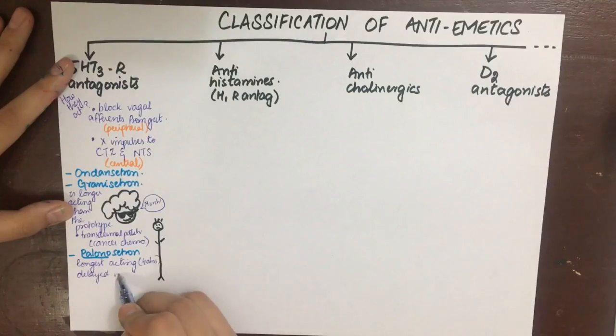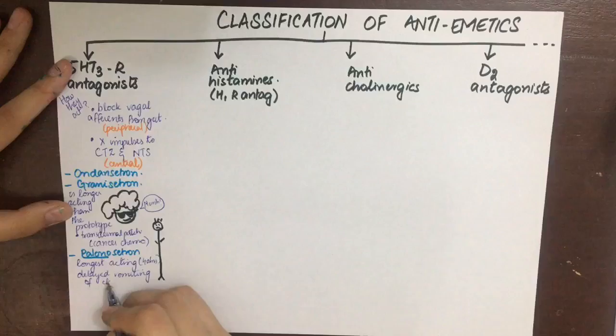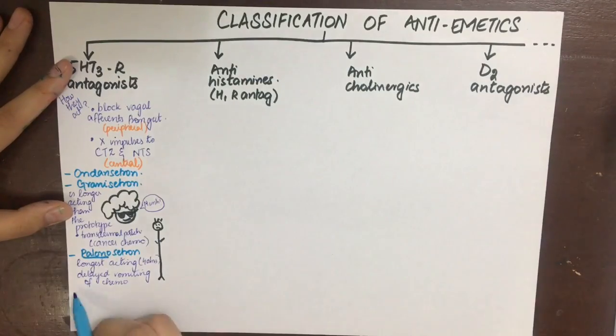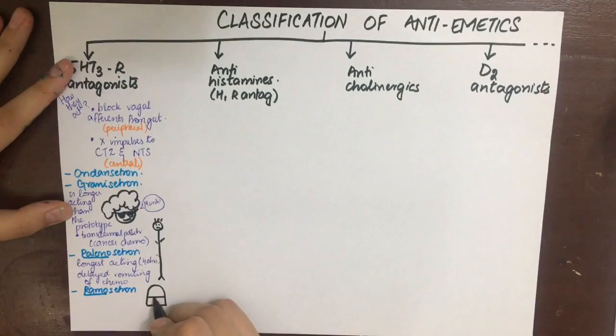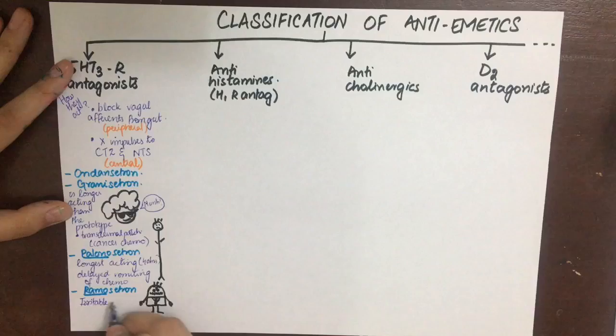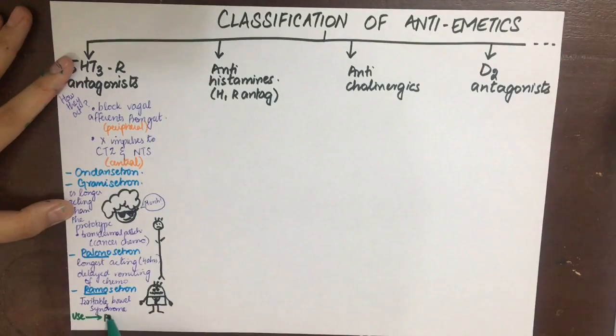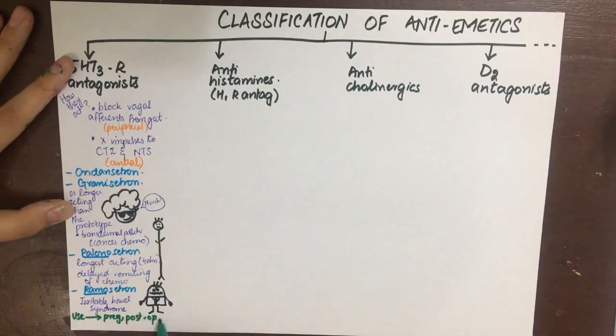Lastly we have ramosetron, which is used in irritable bowel syndrome. Altogether, these drugs can be used in hyperemesis of pregnancy, post-op and post-radiation emesis. But remember they cannot be used in motion sickness because there was no 5-HT3 receptor on the vestibular apparatus or on the vomiting center.